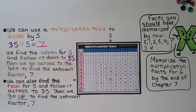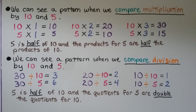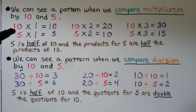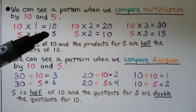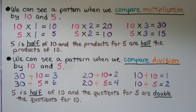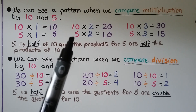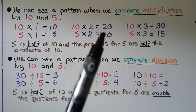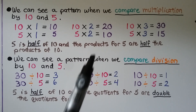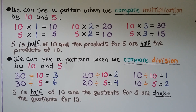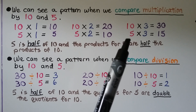Let's look at a pattern when we compare multiplication by 10 and 5. We have 10 times 1 equals 10 and 5 times 1 equals 5 — 5 is half of 10, and the product is half of the product for 10. Then 10 times 2 is 20 and 5 times 2 is 10 — again, 5 is half of 10, and its product is half. Same with 10 times 3 equals 30 and 5 times 3 equals 15.